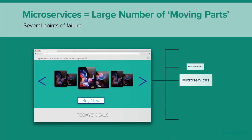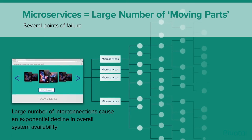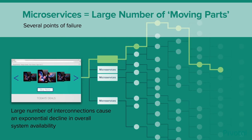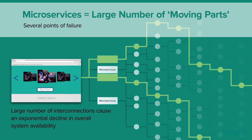Microservice architectures inherently result in more components than monolithic applications. A single request initiated by the user can touch several components like distinct clusters, servers, network hops, and microservice instances. For example, consider an insurance application where a microservice answers: what is my copay for this procedure if I go to the doctor tomorrow? The responding microservice would look up the patient's policy, the policy details, the coverage provider, and the procedure microservice — all composed to answer the copay query. A single failure has a ripple effect across multiple paths, and the overall availability of the system declines exponentially with each additional point of failure.